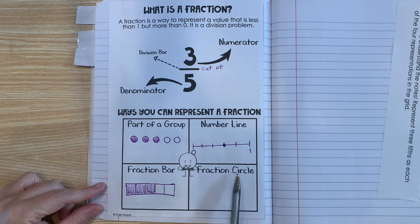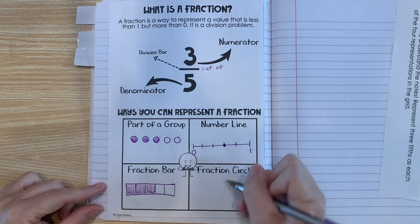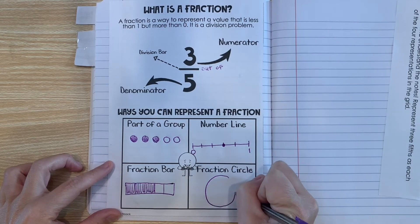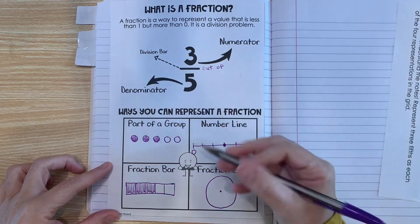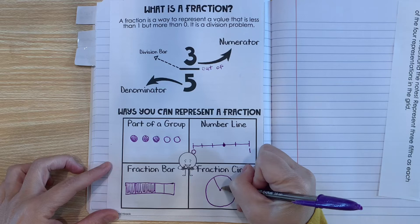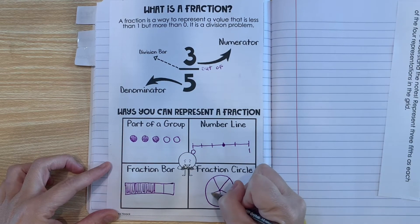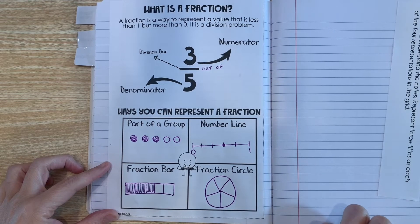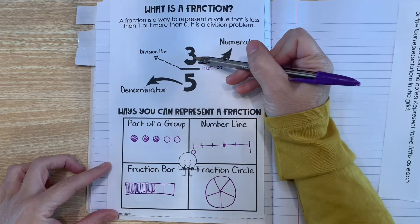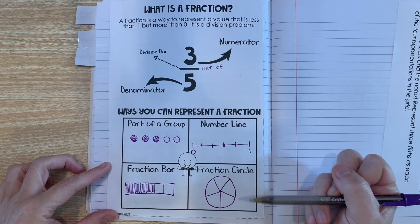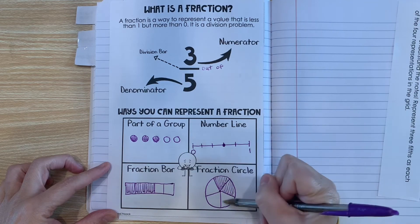And we can also do a fraction circle. So it's very similar to a fraction bar, only you start with a circle. Once again, you're going to try to make five equal parts. Just do the best you can. One, two, three, four, five. So I have five equal parts in my circle. Now the numerator tells us how many we're going to shade. So I need to shade three of the parts. One, two, three.